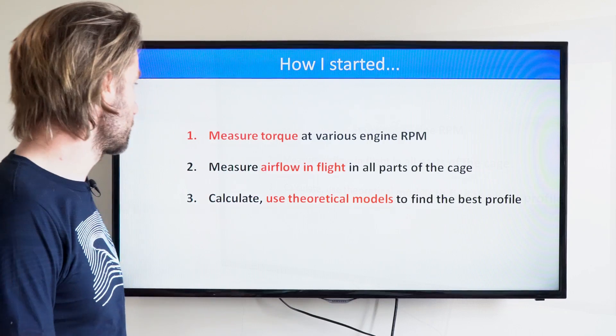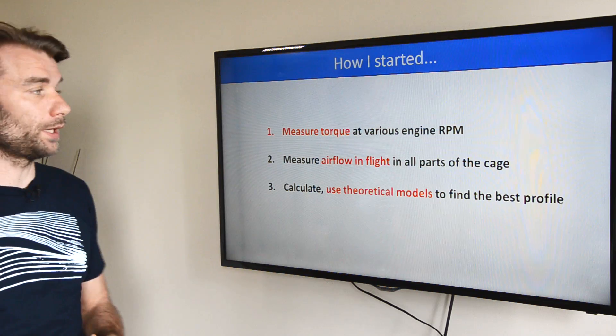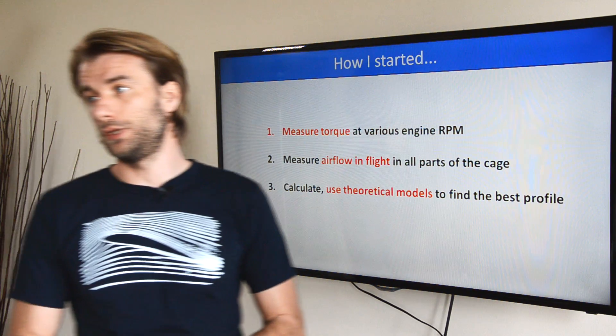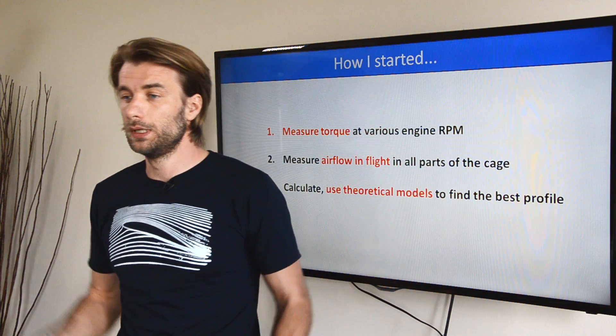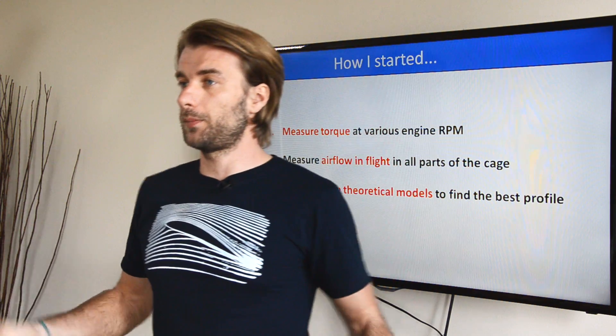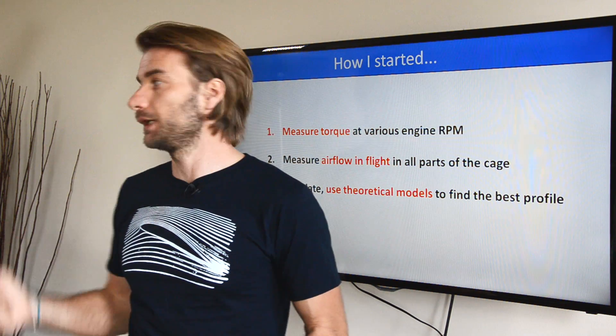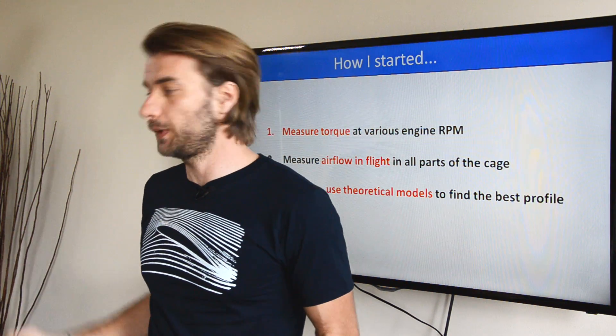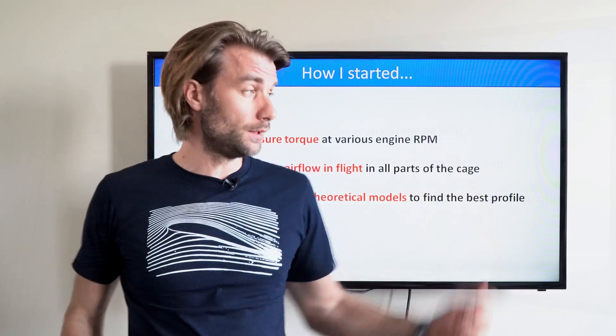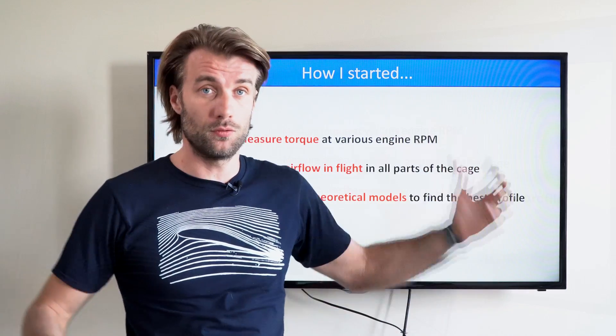The second step was measuring airflow in flight — that was super simple. Strapped into my paramotor, I took off with a small device measuring wind speed and measured it in every single corner of the cage. Surprisingly, the airflow was pretty much the same in all parts of the cage.